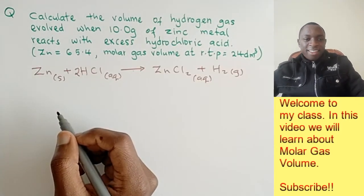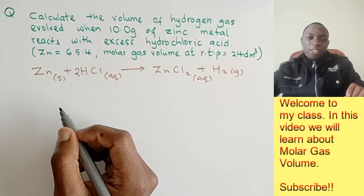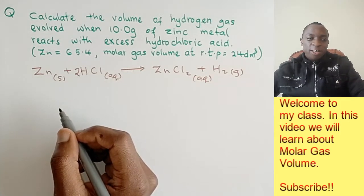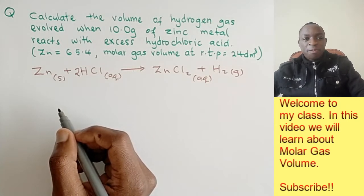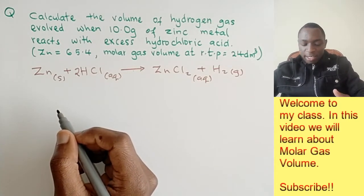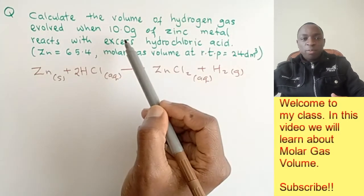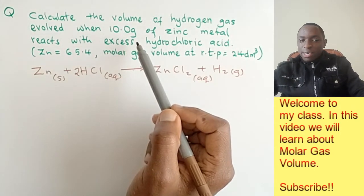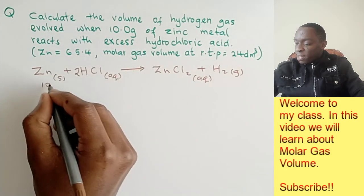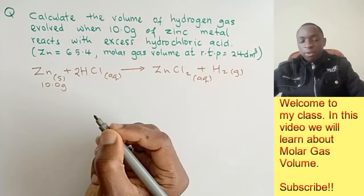If you don't know how to write chemical equations, please check out my other videos on writing and balancing chemical equations. The second thing is to look at the information we've been provided. We have 10 grams of zinc, so the mass of zinc is 10.0 grams.